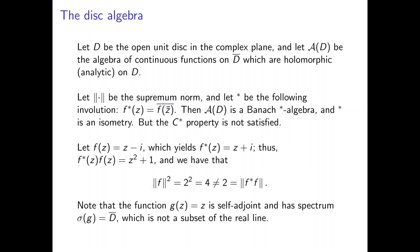Note also that if we take g to be the identity function, this is a self-adjoint element of the algebra with spectrum equal to the closure of the entire unit disk, which is not a subset of the real line. This property actually proves that the disk algebra is not a C-star algebra, as we will see later. For now we use the more basic example with f to directly show the C-star condition fails. In any case, the involution was chosen in a way that makes the C-star condition fail.